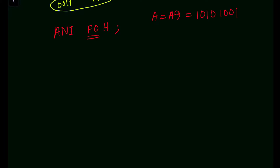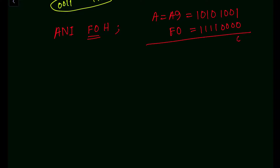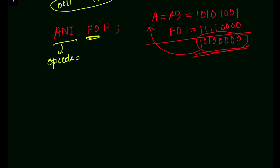The immediate data is F0H — in binary, F is 1111 and 0 is 0000, giving 1111 0000. Performing the AND operation: 1010 1001 AND 1111 0000 gives 1010 0000 — this result is stored in the accumulator after the AND operation. The opcode for ANI is E6H. This completes our two-byte instruction examples.